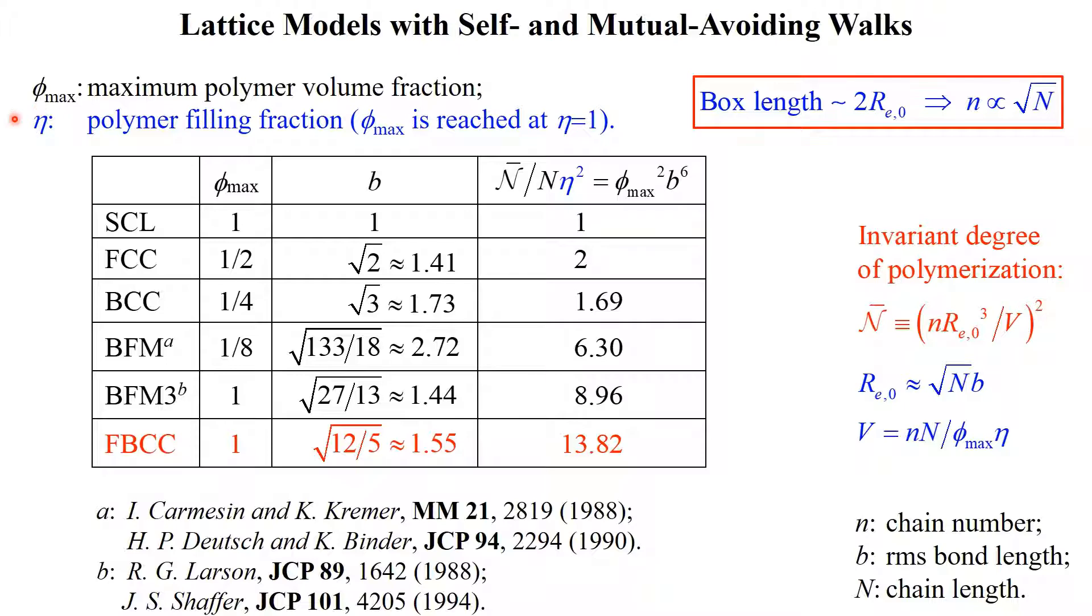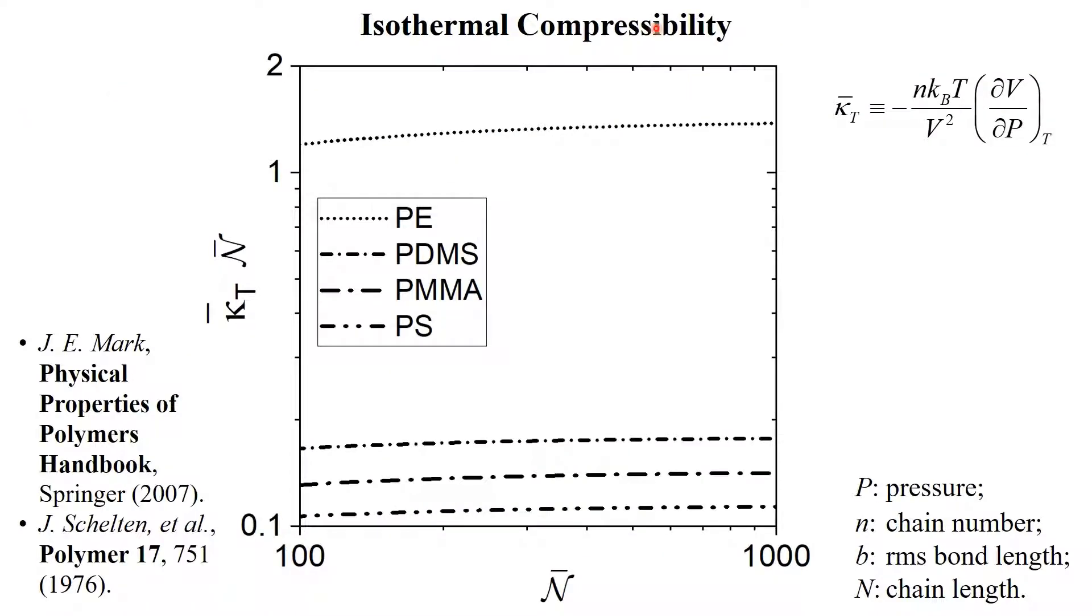Next, we choose the eta value to match the isothermal compressibility of our FBCC model to those of real polymers. Here, we define the normalized isothermal compressibility kappa-T, where P denotes the pressure, and this logarithmic plot shows it as a function of n-bar for polyethylene, polydimethylsiloxane, polyethylmethacrylate, and polystyrene with their property data taken from these two references.